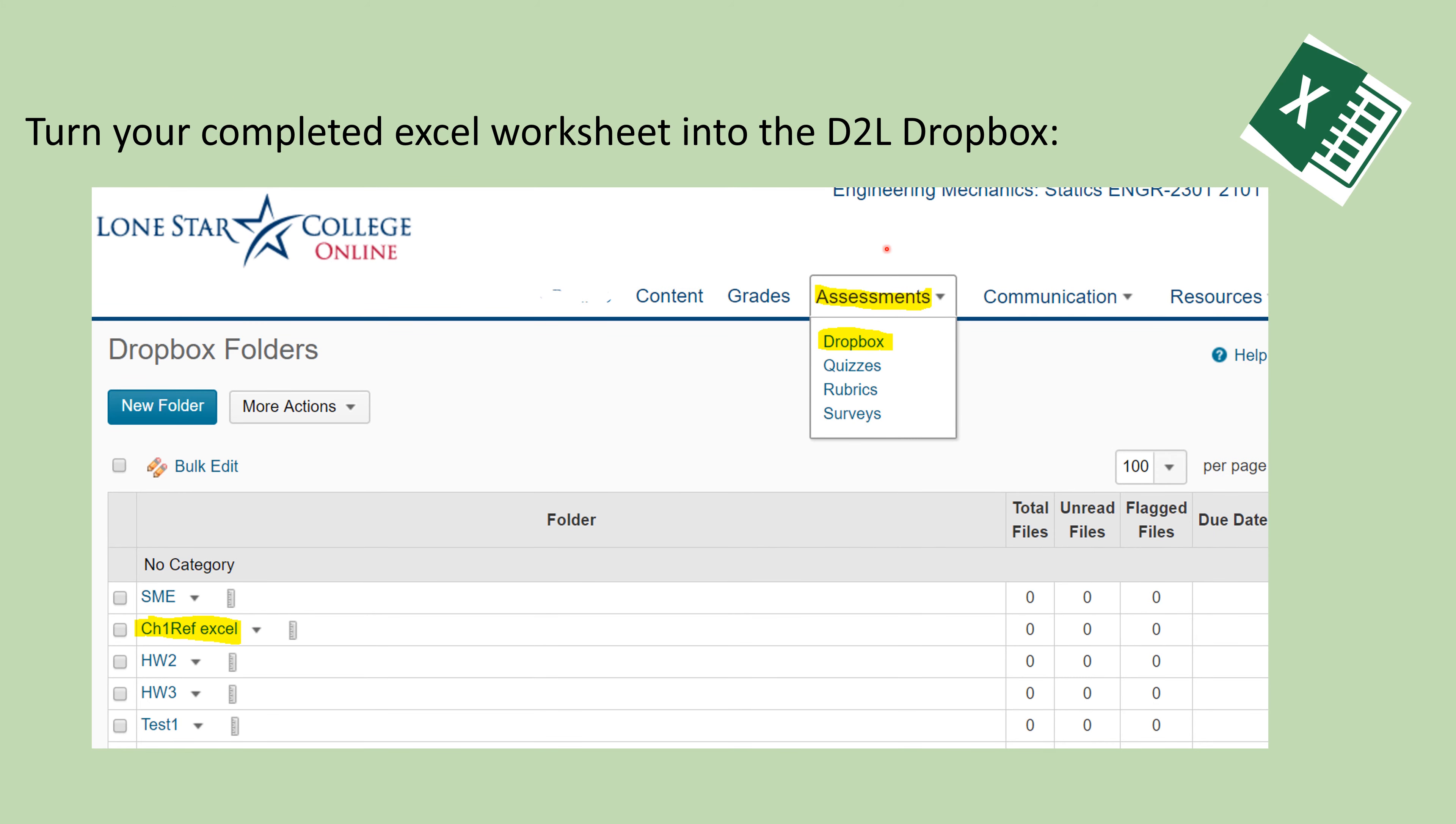The last step, once you have everything in Excel filled out, come over here to Assessments, Dropbox, and look for the Chapter 1 Reference Excel Sheet. Just click on it, and you can download the Excel sheet that you have filled out in here. This is linked to the Gradebook. So after I get it graded, you can click on Grades, and your grade will show up in both the Dropbox and in the Gradebook.